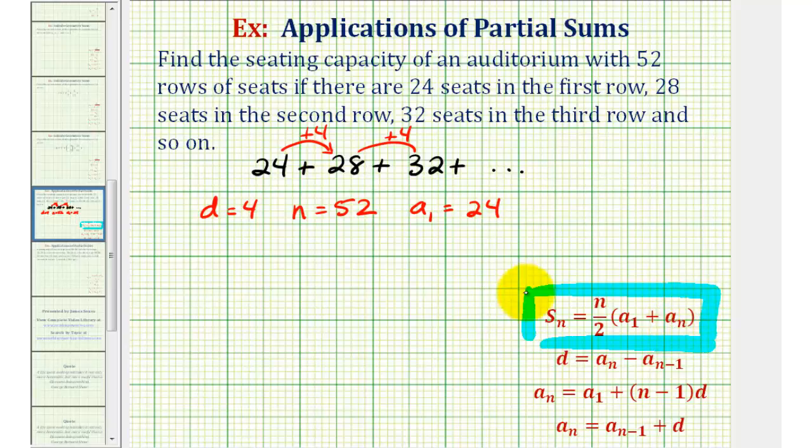So notice before we find this partial sum, we also have to find aₙ, and since n is equal to 52, we need to find a₅₂.